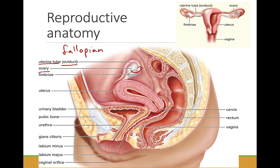It is not attached directly to the ovary. Finger-like projections called fimbriae guide the egg from the ovary into the uterine tube.